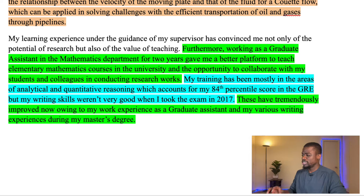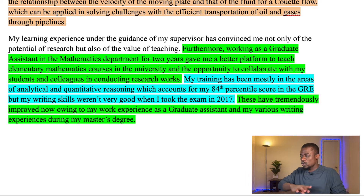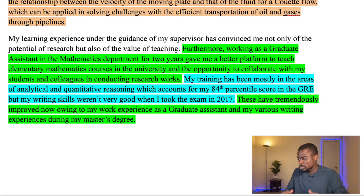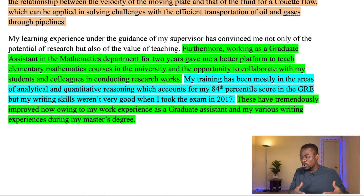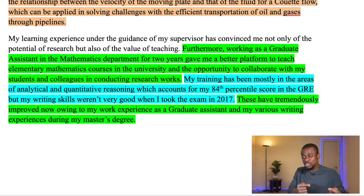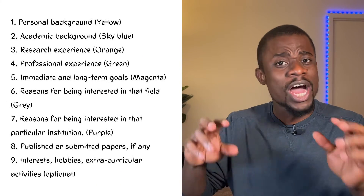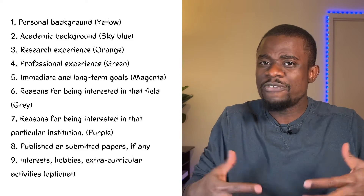Continuing with paragraph three: My learning experience under the guidance of my supervisor has convinced me not only of the potential of research, but also of the value of teaching. Furthermore, working as a graduate assistant in the mathematics department for two years gave me a better platform to teach elementary mathematics courses in the university and the opportunity to collaborate with my students and colleagues in conducting research. My training has been mostly in the areas of analytical and quantitative reasoning, which accounts for my 84th percentile score in the GRE, and my writing skills were not very strong when I took the exam in 2017. These have tremendously improved now owing to my work experience as a graduate assistant and my various writing experiences during my master's degree. This paragraph expresses elements two and four. I spoke about my professional experience, highlighting the area that relates to data science, as well as my academic background, where I spoke about my test score and my reason for not doing very well in the writing section of the GRE. Your personal statement is an opportunity to explain anything that looks like a red flag in your application packet.